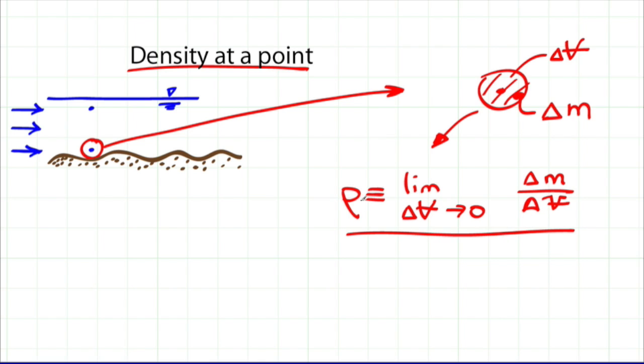Another way to say this is density at a point is the ratio of mass to volume at a point in a flowing fluid.